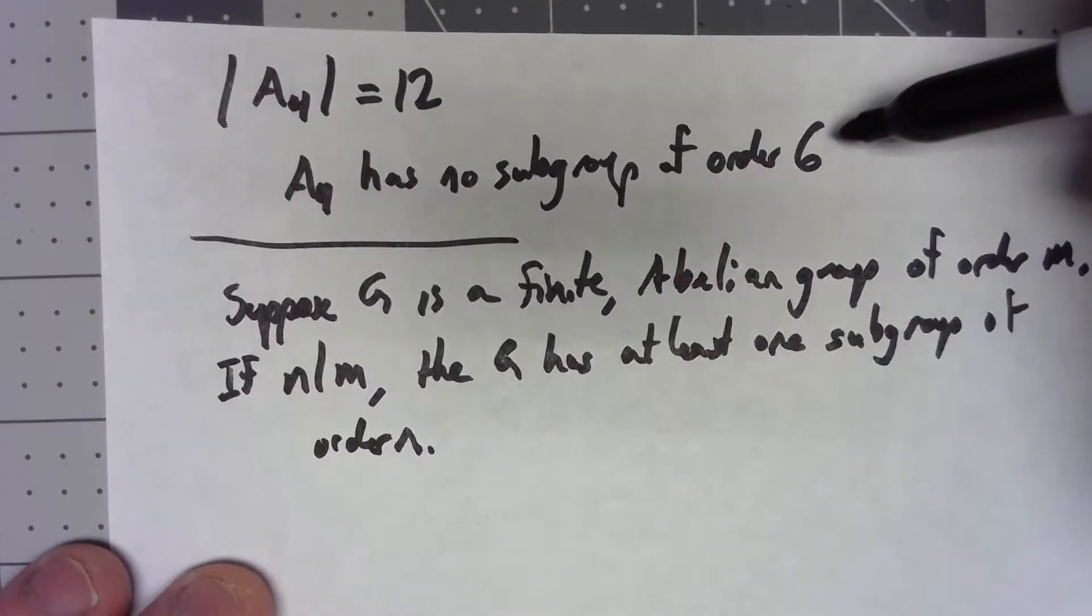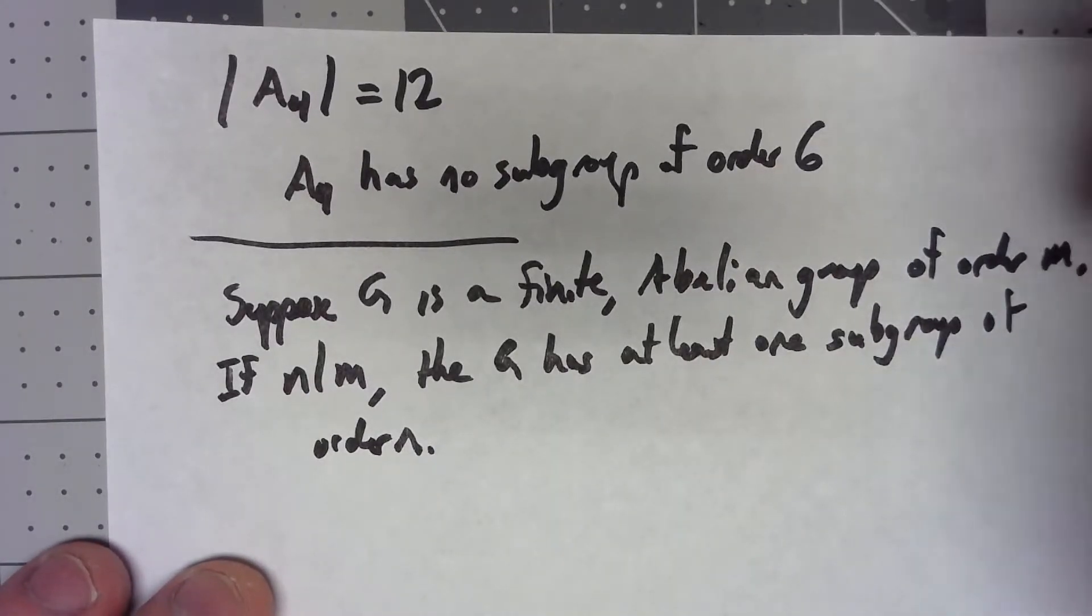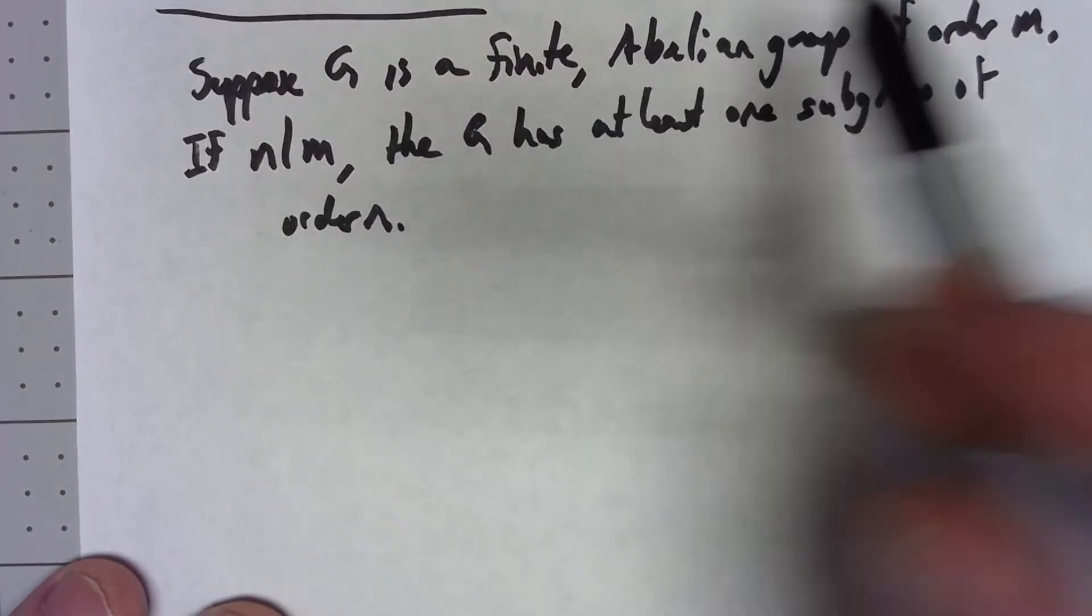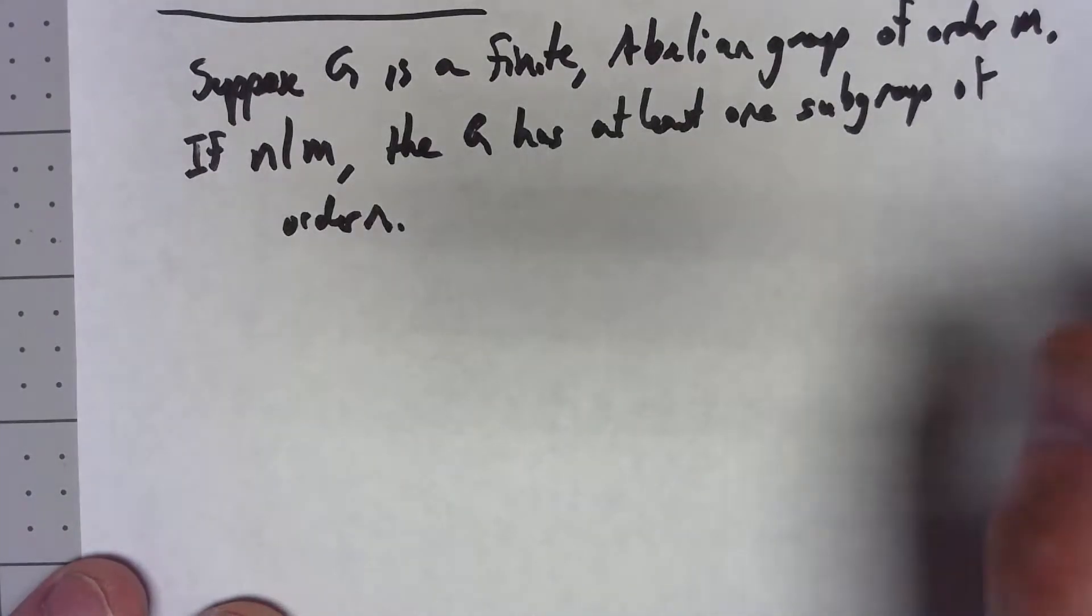It didn't happen up here because this isn't an abelian group, but if we do have an abelian group, we have to have a subgroup of that order.